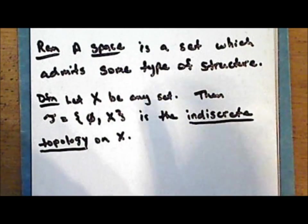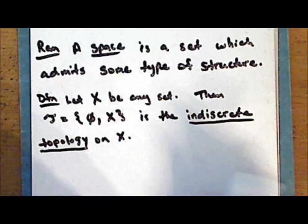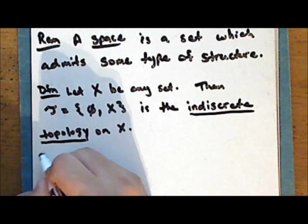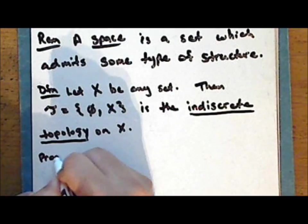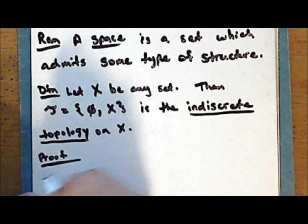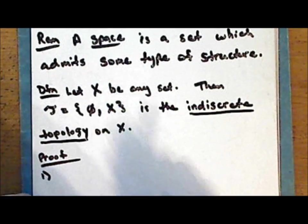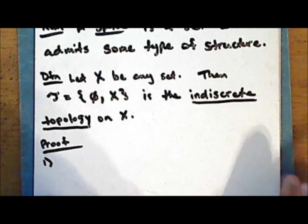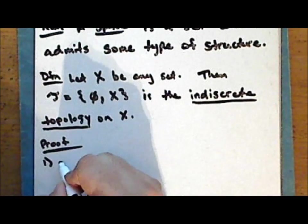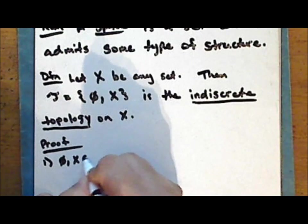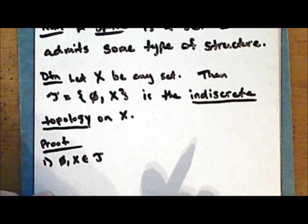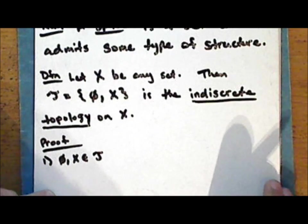We need to demonstrate that the collection tau is a topology. First, very clearly the empty set and the entire set are in the collection tau. They are the only subsets in the collection tau.